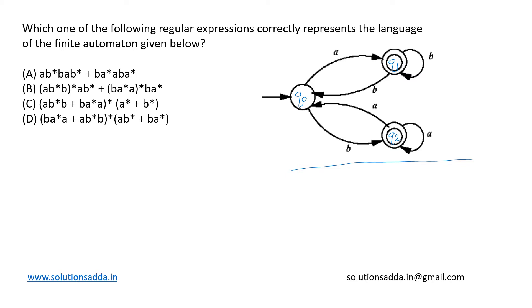How can we reach the final state q1 from the initial state q0? By following this particular path which gives us an expression ab*. Similarly, how can we reach the state q2 from the initial state? By following this particular path which gives us the expression ba*.